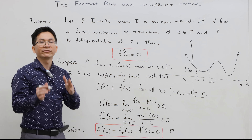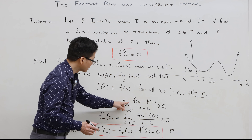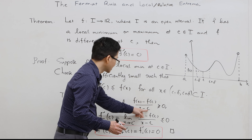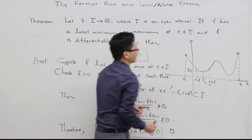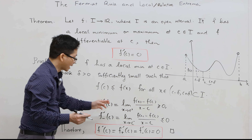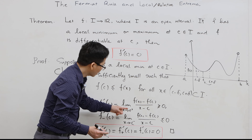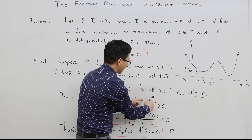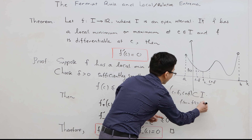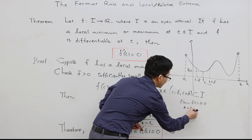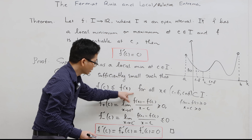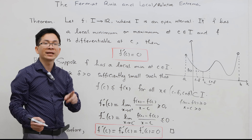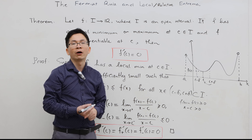Now let's look at the right derivative of f at c. The right derivative is the limit of [f(x) − f(c)] / [x − c] as x approaches c from the right, meaning x is greater than c and close to c. When x is greater than c and close to c, we see that f(x) − f(c) ≥ 0, and x − c is also greater than 0. Therefore this quotient is always ≥ 0, and as a result the right derivative of f at c is greater than or equal to 0.